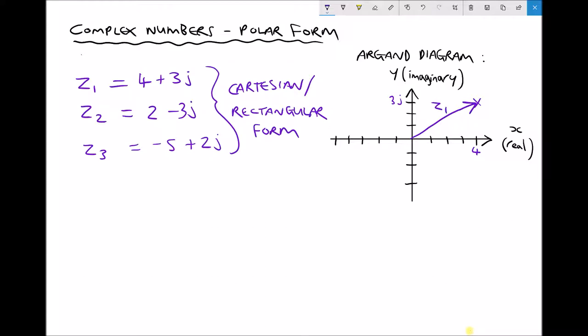We'll do the same for Z2 and Z3 and then we'll look at how we convert these into the polar form. So Z2 is 2 minus 3j, so we go 2 on our real axis, minus 3j on our imaginary axis. Z3 is minus 5 plus 2j, so we're going to go up 2 on our imaginary axis and that gives us Z3 on our argand diagram.